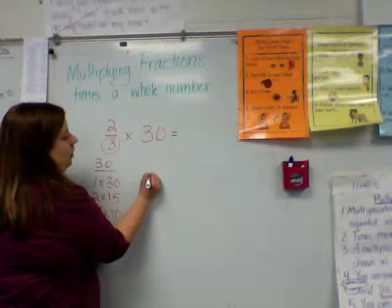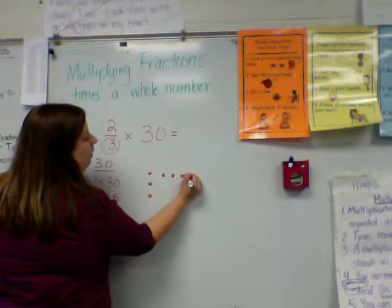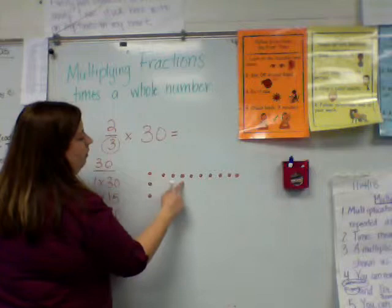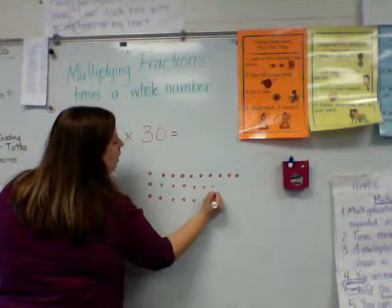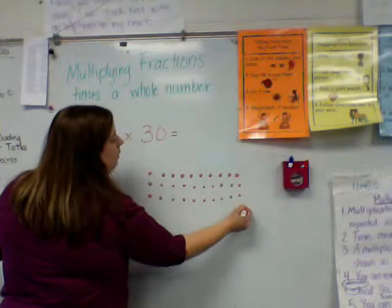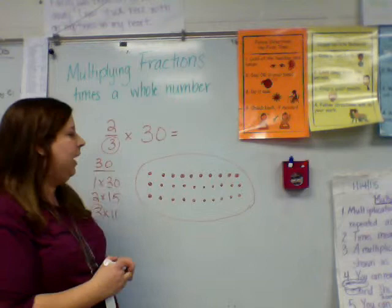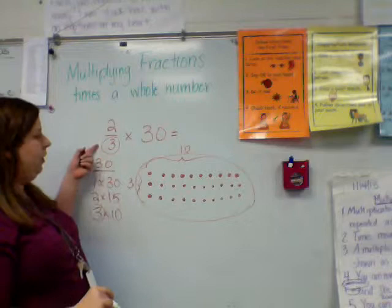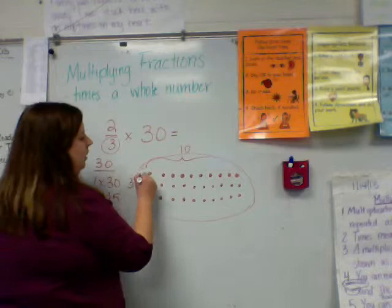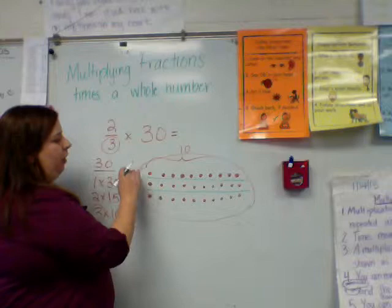An array is a multiplication picture. I'm going to make 3 times 10, and I'm just doing this with dots. So that is my whole of 30 — there are 30 dots there. The array is represented by 3 rows and 10 across the top. And I'm wanting to split this into third-sized groups, so I'm going to draw lines across. Now each of these groups is one-third — each of these going across is one-third of 30.